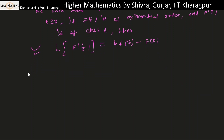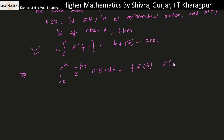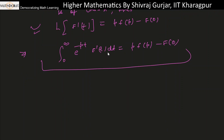We can write the integral from zero to infinity of e^(−pt)·f'(t) dt equals p·F(p) minus f(0). This is just the definition of this expression. Now consider case one: when p tends to infinity, we apply the limit as p tends to infinity.